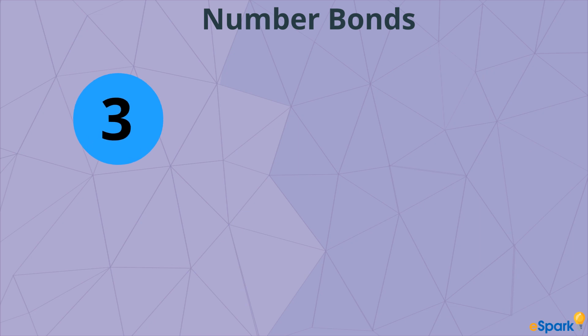These are called number bonds. They show what numbers make up another number, like 1 and 2 make up 3.